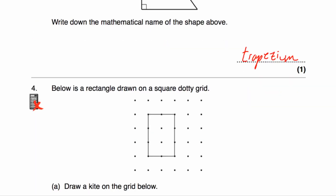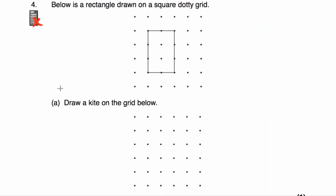Question 4a says draw a kite on the grid below. A kite has one line of symmetry. If drawing it upright, the two top lines are the same length as each other, and the two bottom lines are the same length as each other — and there's our kite on the grid.